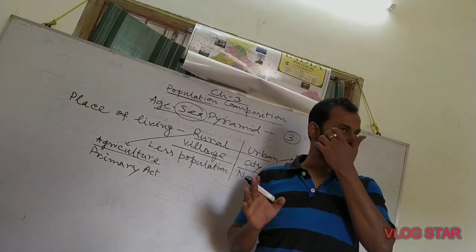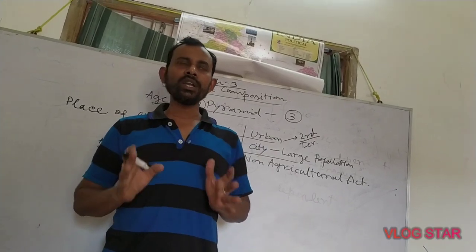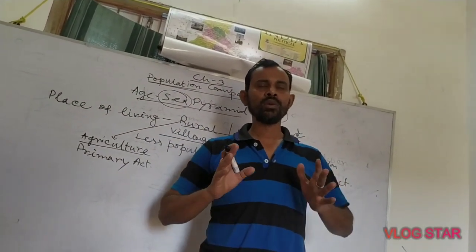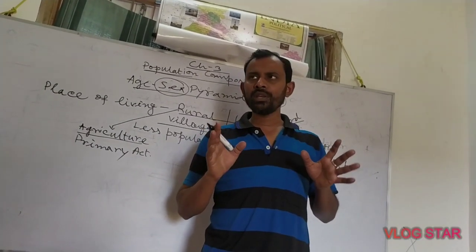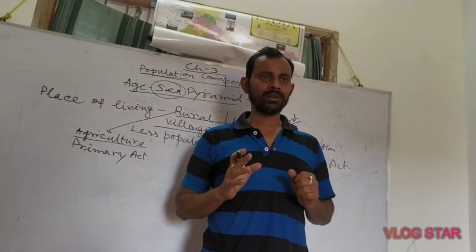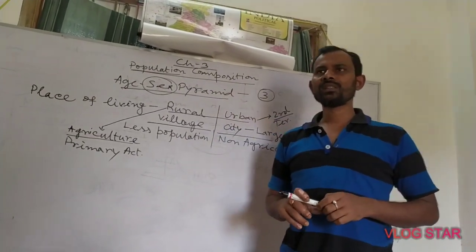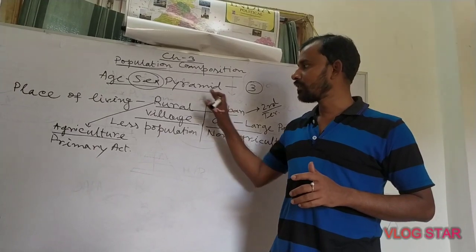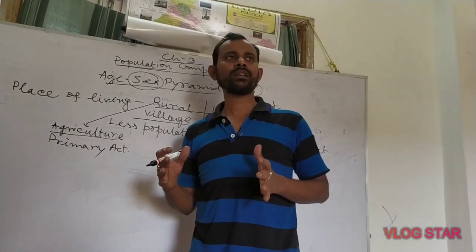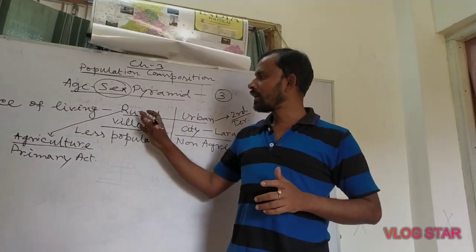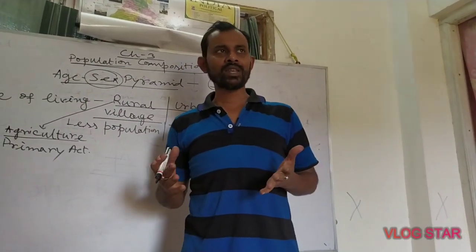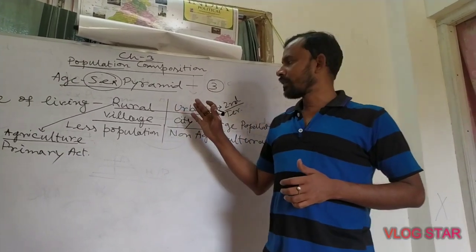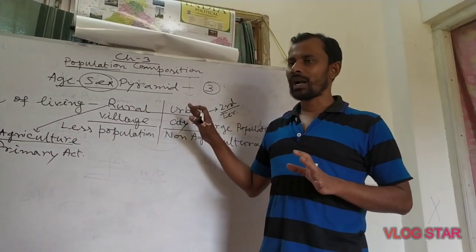In the rural-urban composition, we will see continent-wise which people live in rural areas and which in urban areas in large numbers. Maximum European and North American countries have more urban population than rural. In India and other South Asian and Southeast Asian countries, people mainly live in rural areas. So we can automatically understand their occupation — urban in advanced countries, rural in Asia.